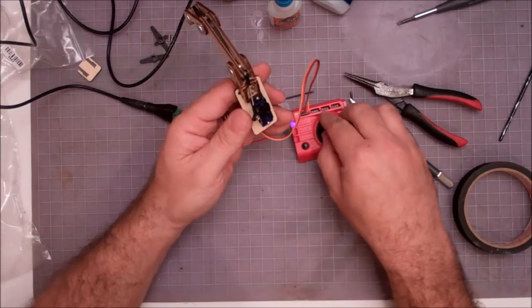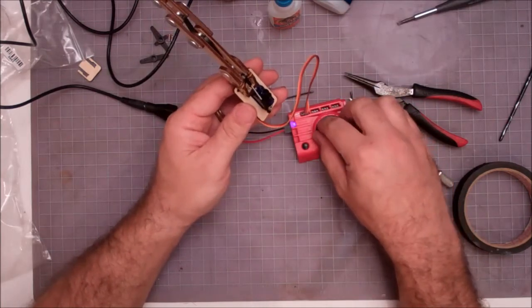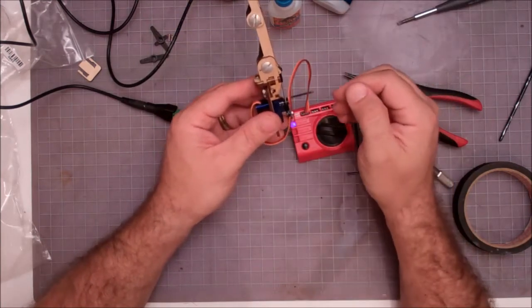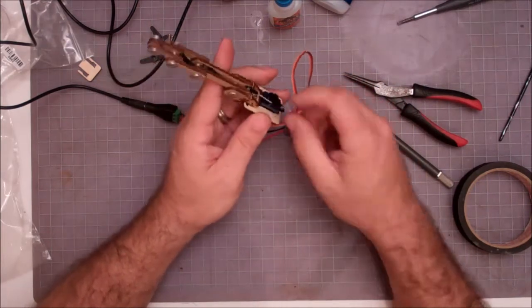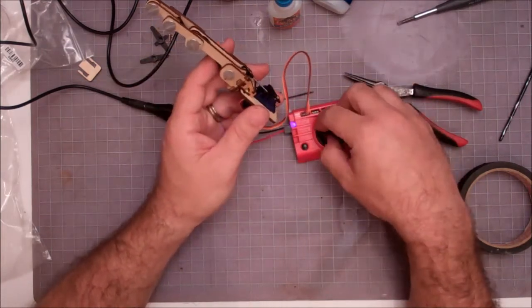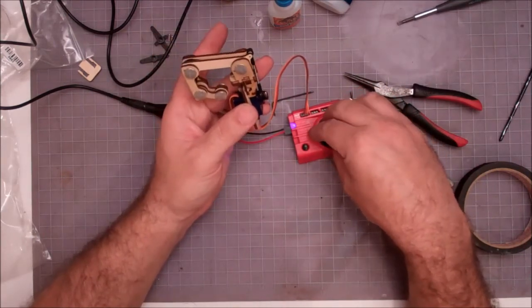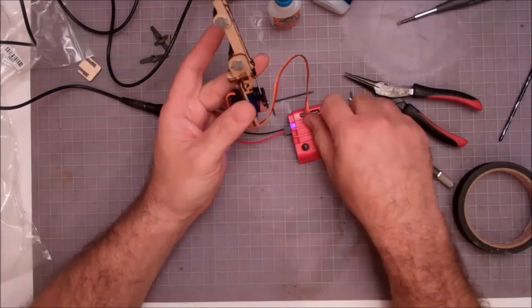So you can see there now if your servo is going all the way and your finger's not quite in the position you like, you can disconnect this ball and adjust the length of that linkage to help tune in the servo throw. So I'm going to leave that up to you guys to kind of tune them in.